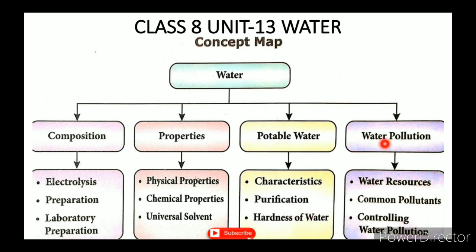The fifth topic is Water Pollution. Water resources include fresh water — only about 1% is accessible for use; 99% is unavailable as groundwater or otherwise. Man-made activities cause water pollution. In this video we cover the fifth topic. The sixth topic, Controlling Water Pollution, will be in the next video. Common pollutants are generally classified as Domestic pollutants, Agricultural pollutants, and Industrial pollutants.